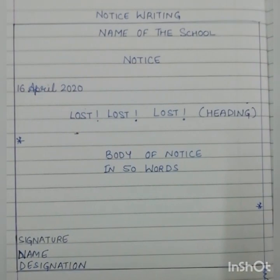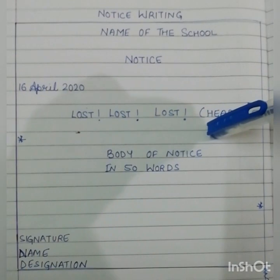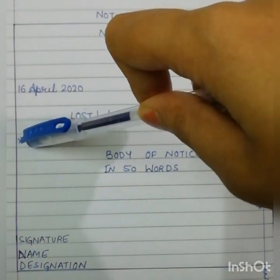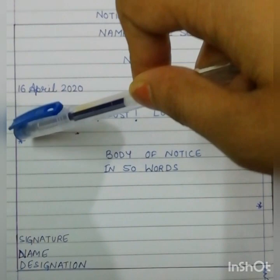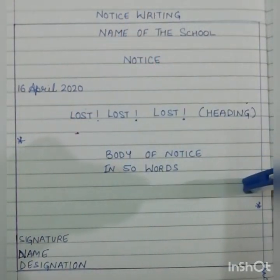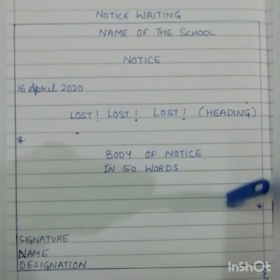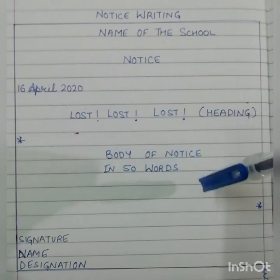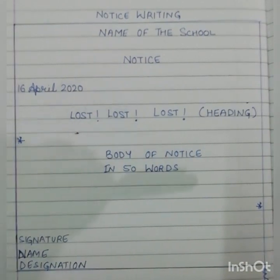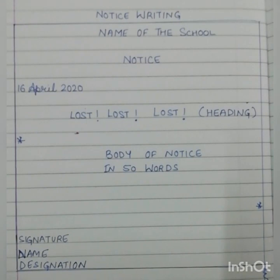After the heading, leave one line again and from the next line, from the very beginning, start writing the content — that is called the body of the notice. This body has to be in 50 words, not more than that. A notice has to be always short and appropriate, containing all relevant information such as date, time, and venue.